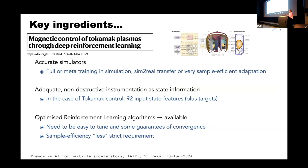The key ingredients hold for the tokamak case too. They had accurate simulators, trained in simulation, and performed zero-shot transfer from simulation to real. They also had adequate non-destructive instrumentation as state information — in that case 92 input states — and the adequate algorithms. These are essentially the requirements for most of our cases.